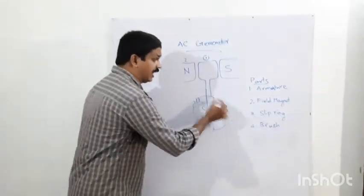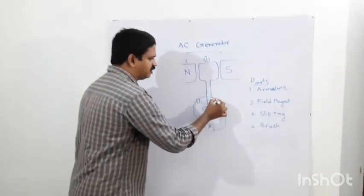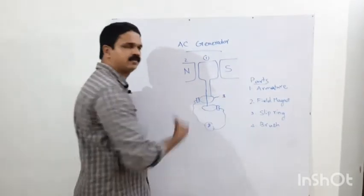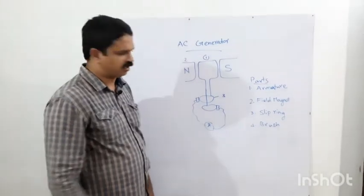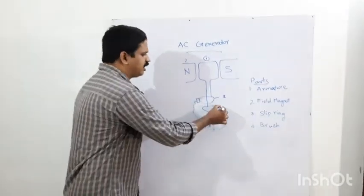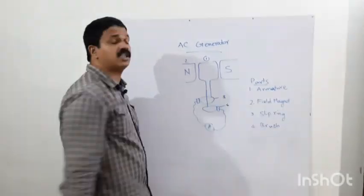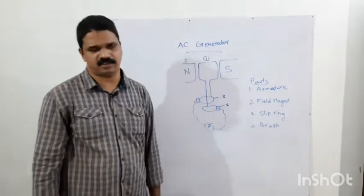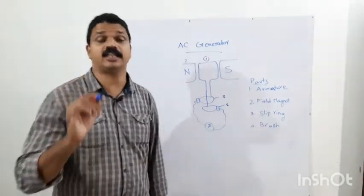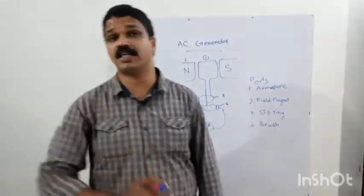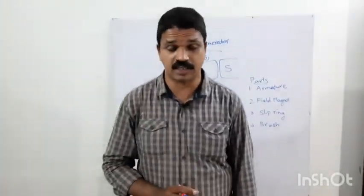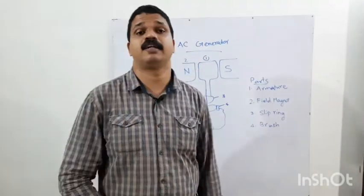The third one is slip rings. The fourth one is the brush. These are the main parts of the generator.